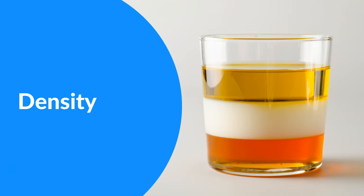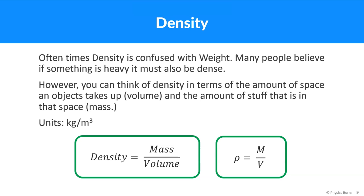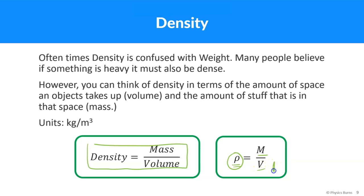Density is often confused with weight. Many people believe if something is heavy, it must also be dense. However, you can think of density in terms of the amount of space an object takes up — volume — and the amount of stuff in that space — mass. The formula is: density equals mass divided by volume. For example, styrofoam — a large chunk has a lot of volume, but it's very light, so the mass is very little. The density would be extremely small because it has so much volume but very little mass. That's why styrofoam floats on water.